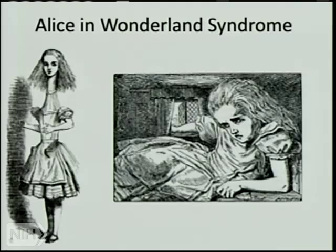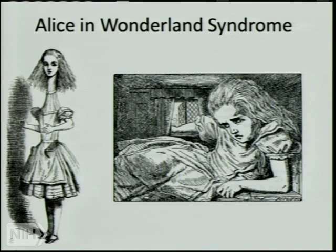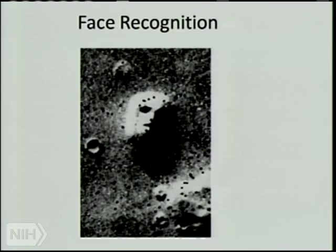There's an odd thing some migraineurs notice called Alice in Wonderland syndrome — they feel like they're really big, or half their body is big, or something's wrong. It's a combination of spatial and proprioceptive problems. Again, it's self-limited, lasting less than half an hour.